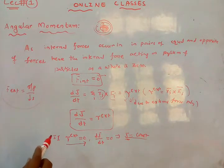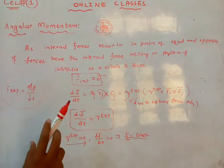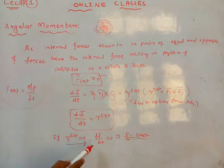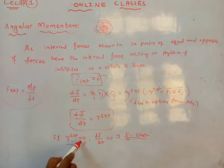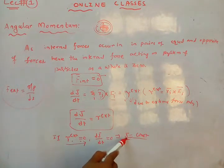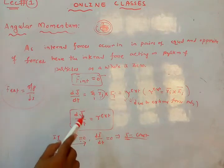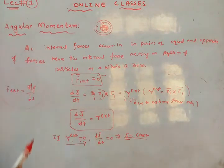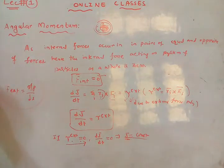To state the theorem formally: if the external torque acting on a system of N particles is zero, the angular momentum of the system remains constant. This is the conservation theorem of angular momentum. This is the first theorem shown here.